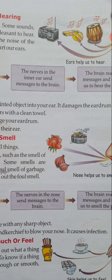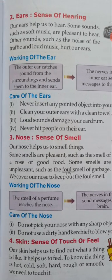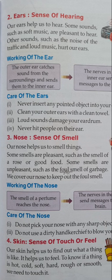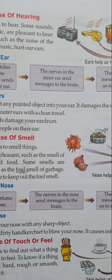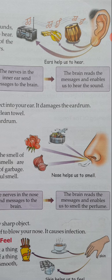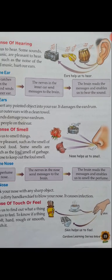So to summarize the working: Pahle outer ear surrounding se sound catch karta hai aur usko inner ear mein bhejta hai. Phir inner ear ke nerves message send karte hain brain ke paas. After that, the brain reads the message aur hum log sun paatay hain. This is the working of ears.